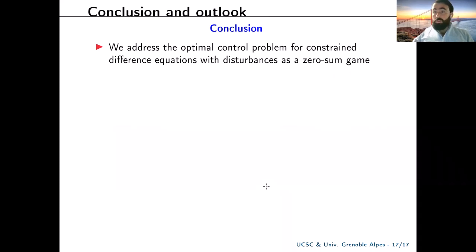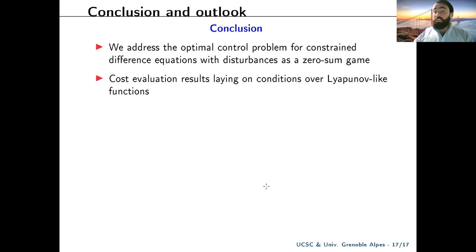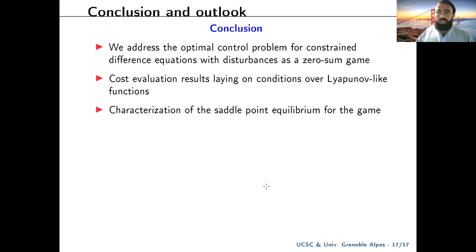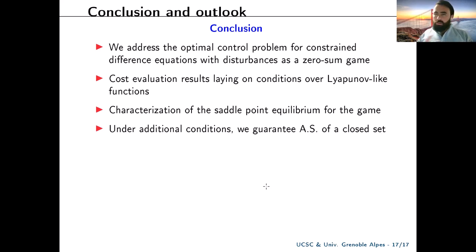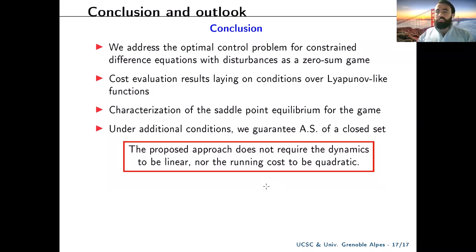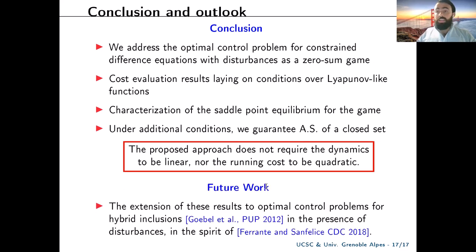In summary, we address the optimal control problem for constrained difference equations with disturbances as a zero-sum game. We presented cost evaluation results laying conditions over upper Lyapunov-like functions and characterized the saddle point equilibrium for the game. Under some additional conditions, we guarantee asymptotic stability of solutions. Importantly, this approach doesn't require dynamics to be linear nor the running cost to be quadratic, and we plan to extend these results to optimal control problems for hybrid equations in the presence of disturbances.